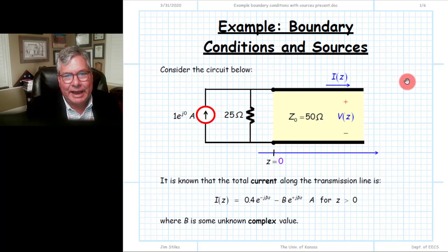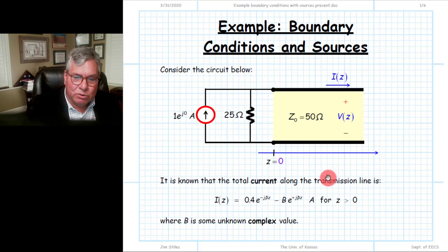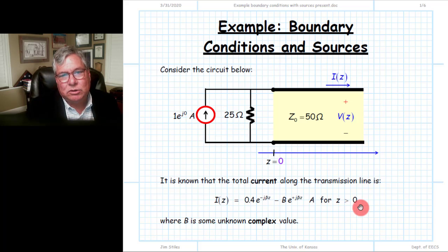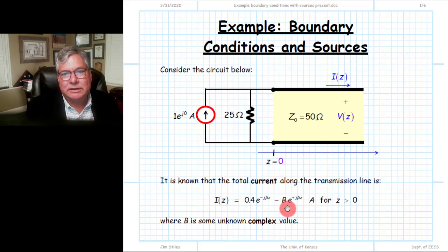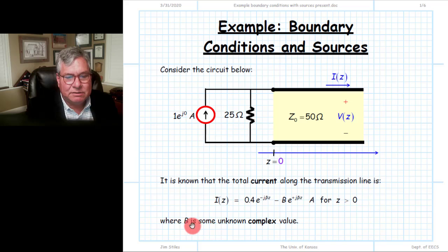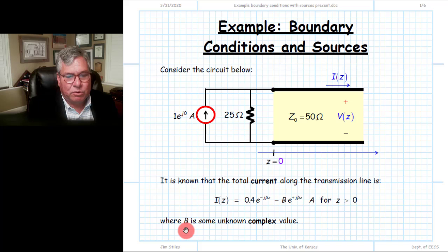Notice we haven't said anything about what's attached to the other end of the line, and of course until we do there's really no way to solve the problem — unless we are given some other piece of information. This problem has given us the form of the total current, almost exactly, with the exception of some complex value B that is unknown. This is a bit of an academic problem: we don't know what's attached to the line, but we do know the general form of the current. Our goal is to determine the value of this complex value B by applying boundary conditions.